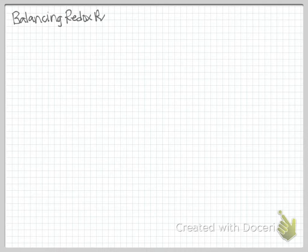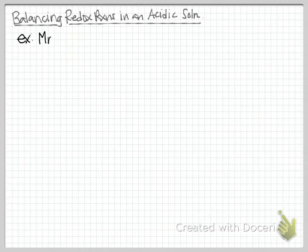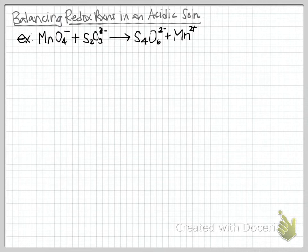Today's tutorial is about balancing redox reactions that occur in an acidic solution. These redox reactions can also occur in a basic solution, but that will be the focus of our next tutorial. Our example reaction is MnO4- plus S2O3-2- forming S4O6-2- and the Mn2+ ion — permanganate plus thiosulfate forming tetrathionate and manganese-2. All are ions, so they're all aqueous. This reaction is not balanced; we have the wrong number of oxygens, sulfurs, and the charges aren't balanced. We're going to go through a series of steps to balance this reaction.